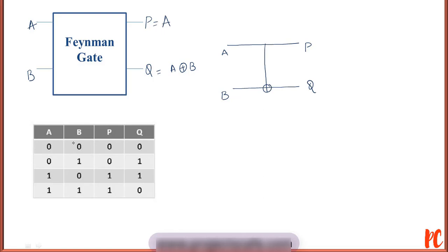The thing to observe here is when A is equal to 0, Q is the replication of B bar. Similarly, when A is equal to 1, Q is the replication of B bar.